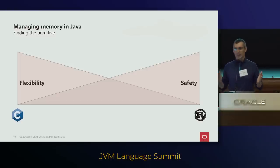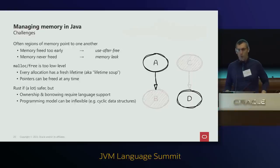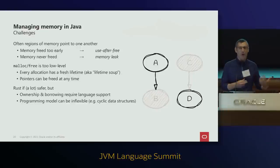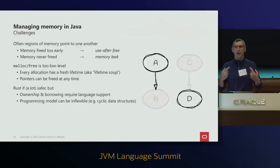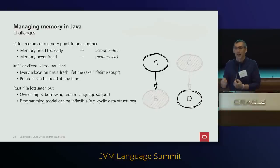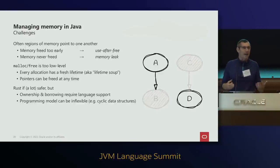We have to find a balance that works best for Java developers. The challenges with explicit memory management are: first, memory regions often depend on each other through pointers, and freeing them too early creates dangling pointers — use-after-free. Second, forgetting to free memory causes a memory leak. malloc/free is not the right solution; it creates a 'lifetime soup' where an application has 47 different memory regions each with its own lifetime and no safe way to control them. malloc also provides no access control.